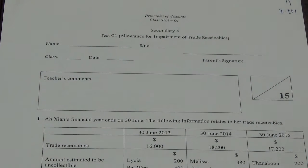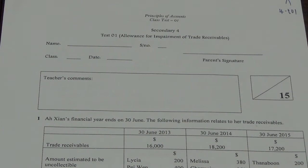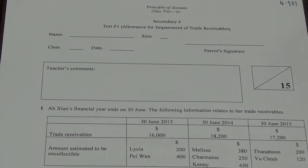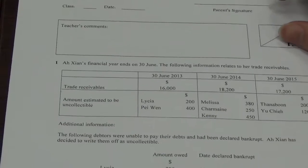Okay, we look at your test for allowance for impairment of trade receivables. How do we do the question? How do we do it? Alright.